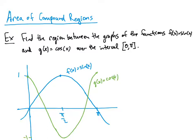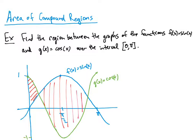Looking at the areas between these two curves, we have two different areas. Let's call these R1 and R2. To find the area R1, we need to know the limits of that integral. The left bound is 0. We need to find where the functions intersect by setting them equal: when is sin(x) equal to cos(x)? That's at π/4, where both have a value of √2/2.